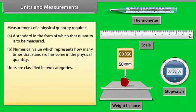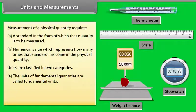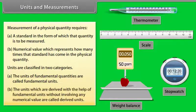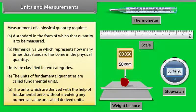Units are classified in two categories. The units of fundamental quantities are called fundamental units. The units which are derived with the help of fundamental units without involving any numerical value are called derived units.